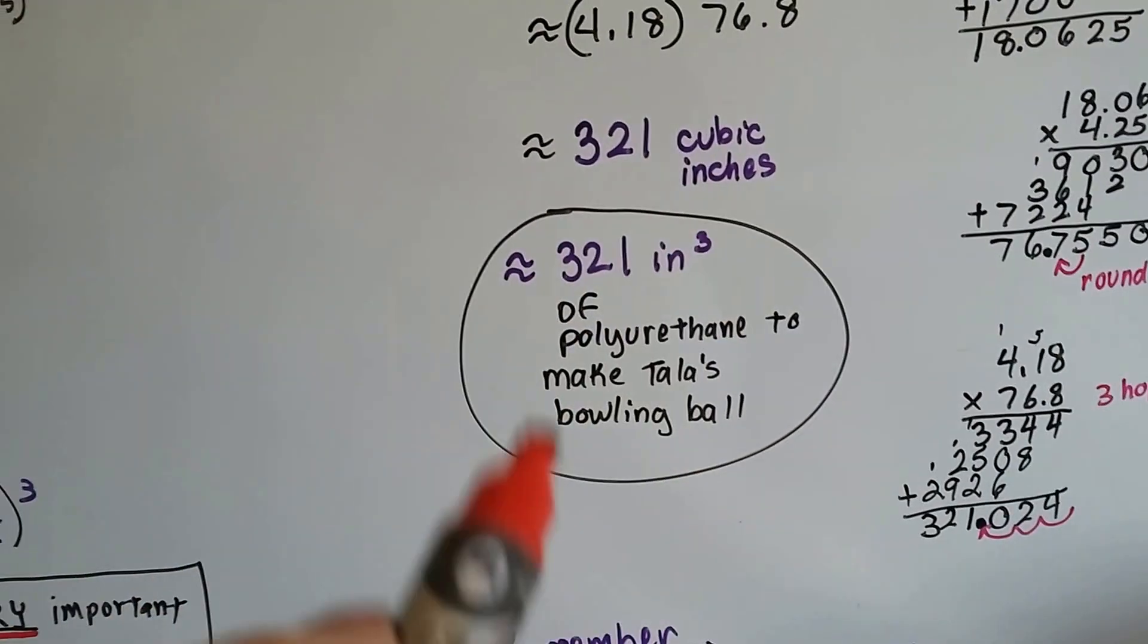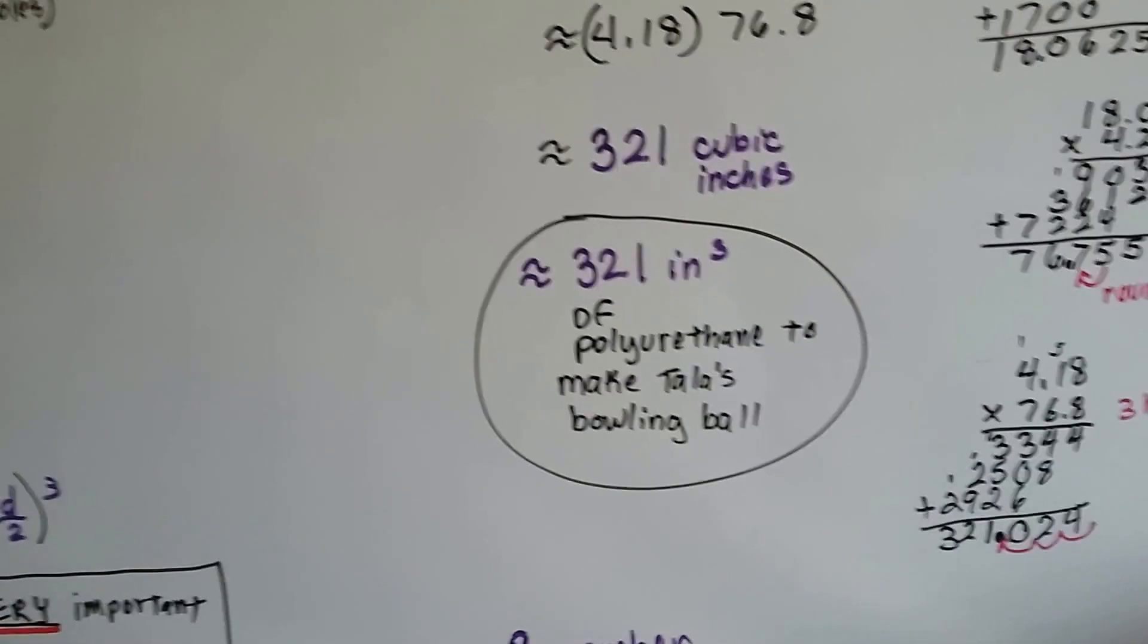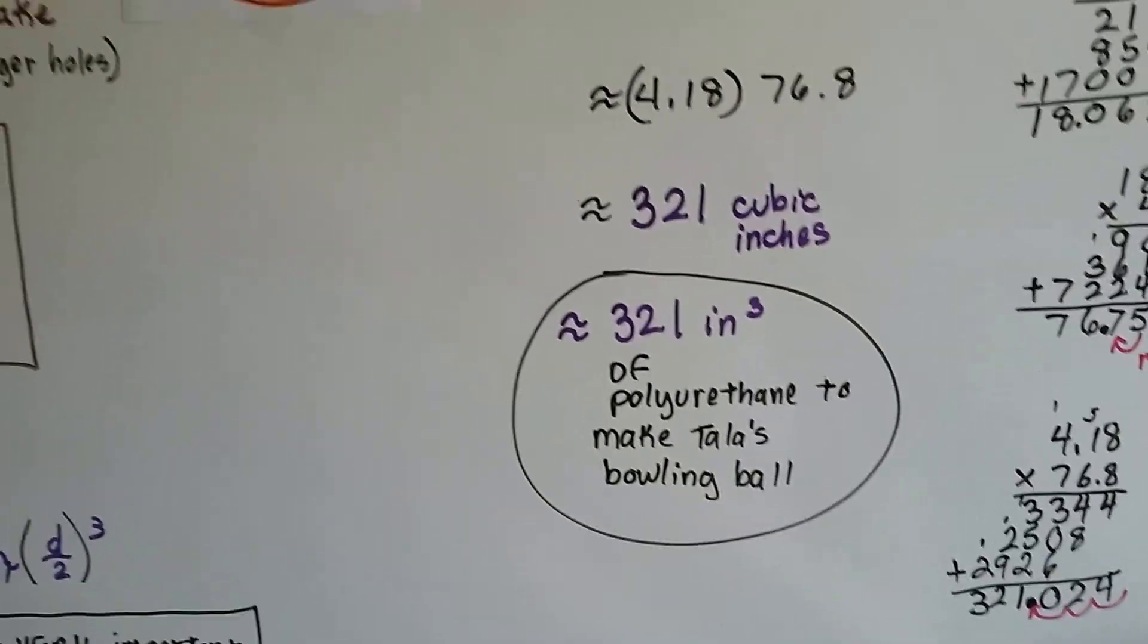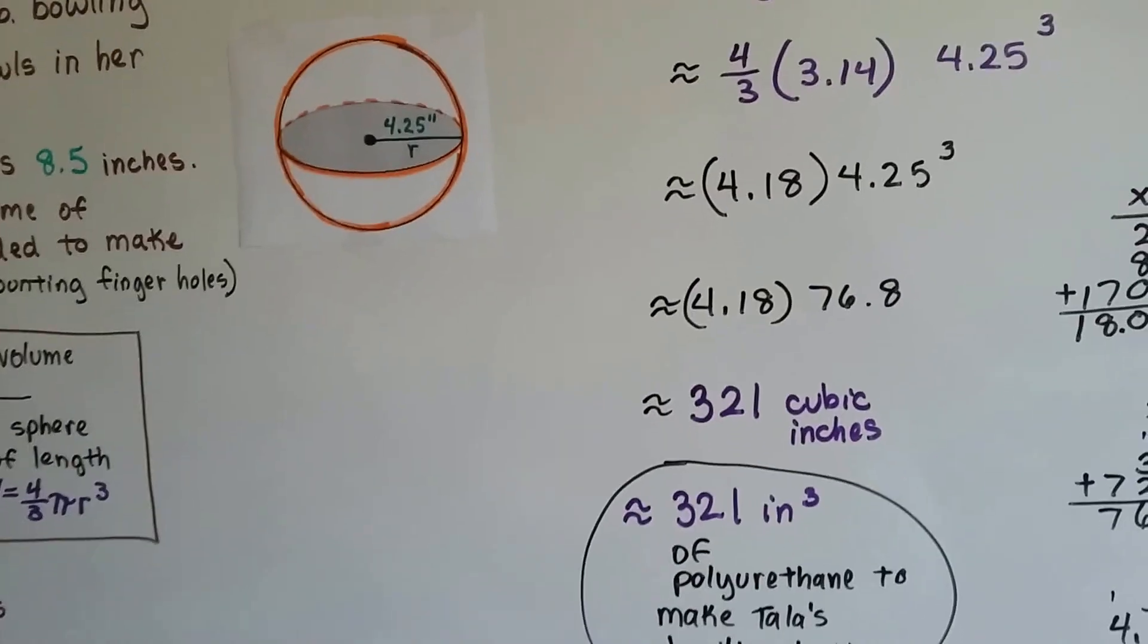321 inches cubed of polyurethane to make Tala's bowling ball. We got our answer.